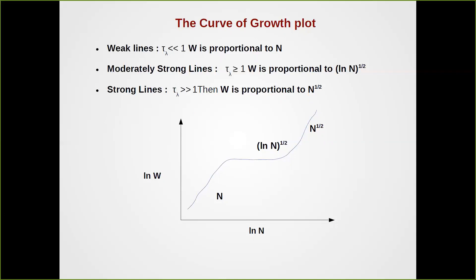This is called the curve of growth and is widely used in studies of the interstellar medium, especially when we want to see the absorption by different ions like silicon or sodium. It also is very important because if we know the equivalent width, we can read off from this curve an approximate estimate of the column density of atoms along the line of sight.